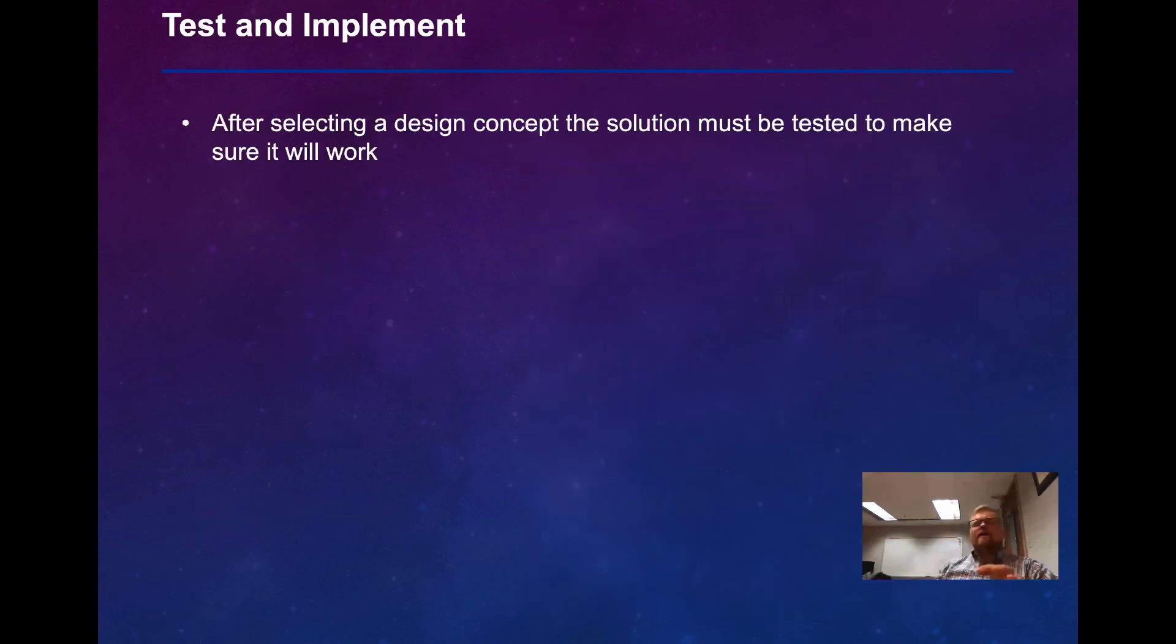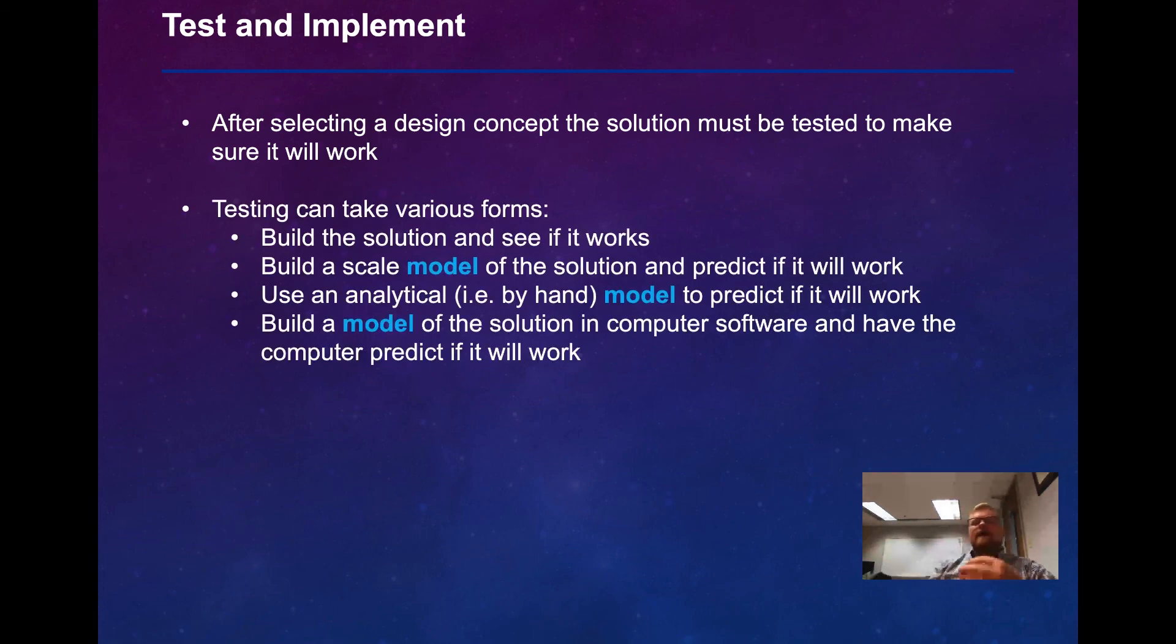After selecting a design concept, the solution must be tested to make sure it's going to work. Testing can take various forms. We can build the solution, see if it works. If it's something that's relatively inexpensive to prototype, that might be what we do. We could build a scale model of the solution and predict if it will work based on the model. We could do an analytical or by-hand model. In other words, use mathematics and see if it will work. Or we might build a model of the solution in a computer-aided design software such as SolidWorks or Inventor and have the computer predict if it will work.